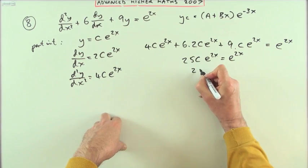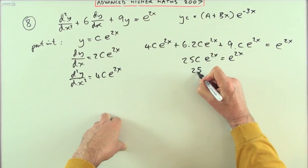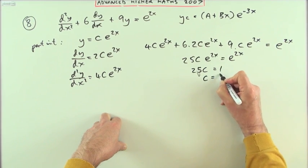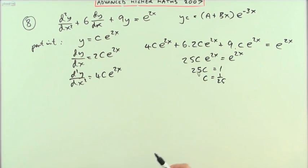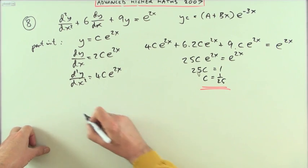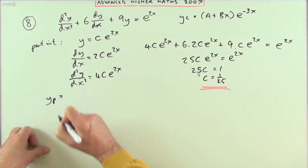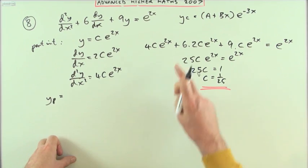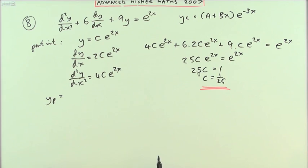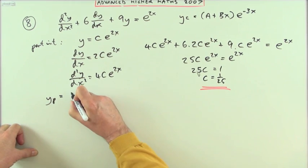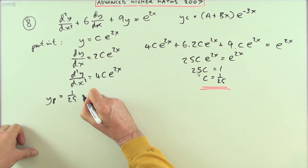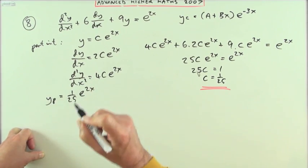If these two expressions are meant to be the same, their coefficients must be the same. That means 25c should equal 1, so c = 1/25. Which means that my particular integral is 1/25·e^(2x).